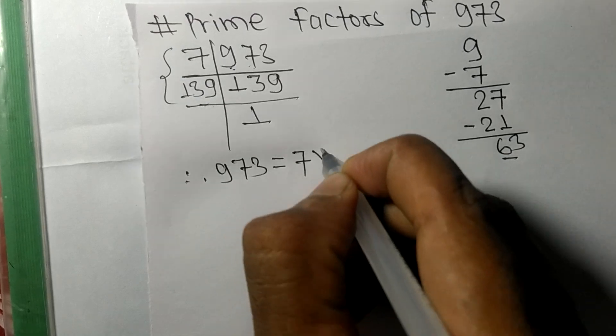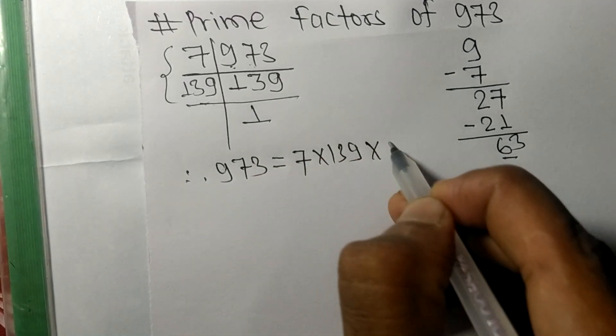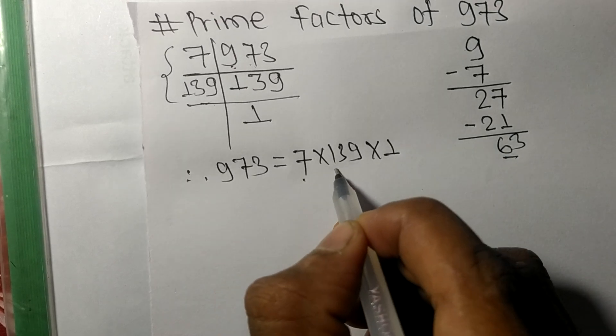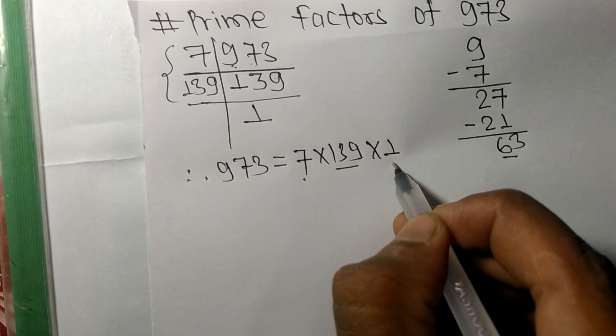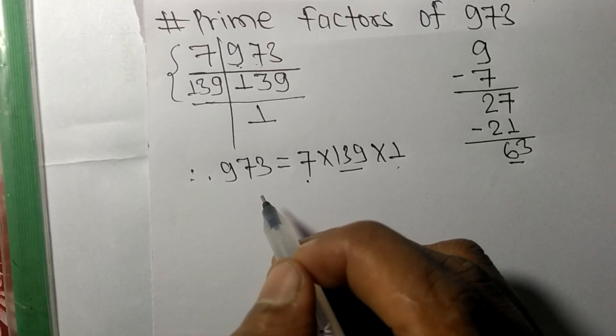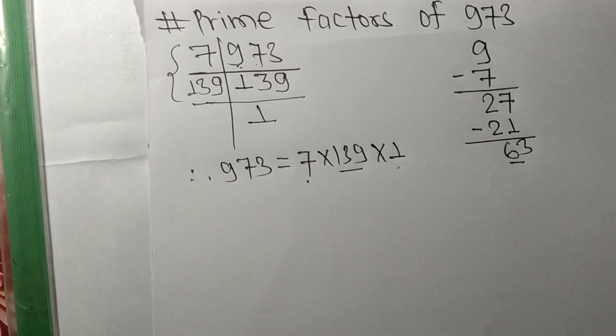From here it is 1. So 7, 139, and 1 are the prime factors of 973. So this much for today and thanks for watching.